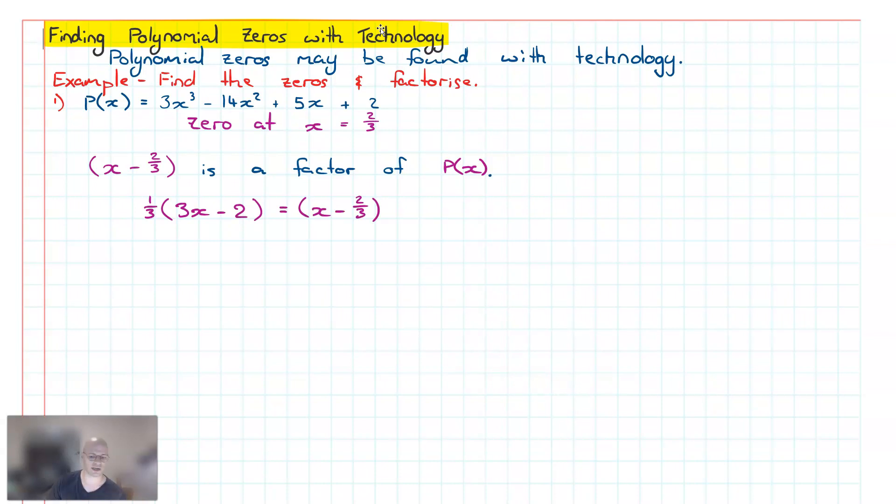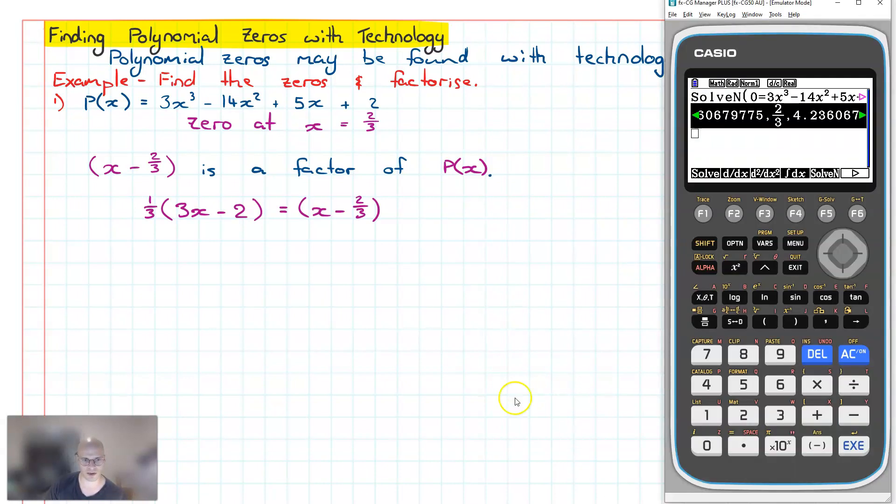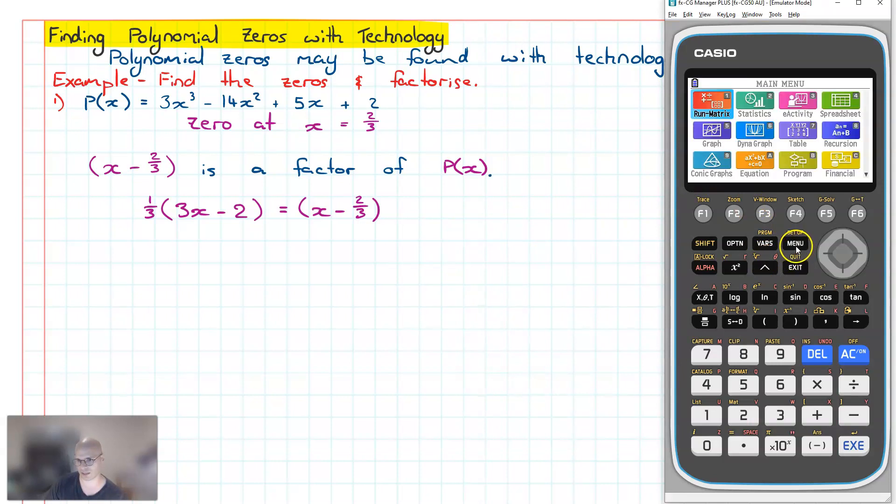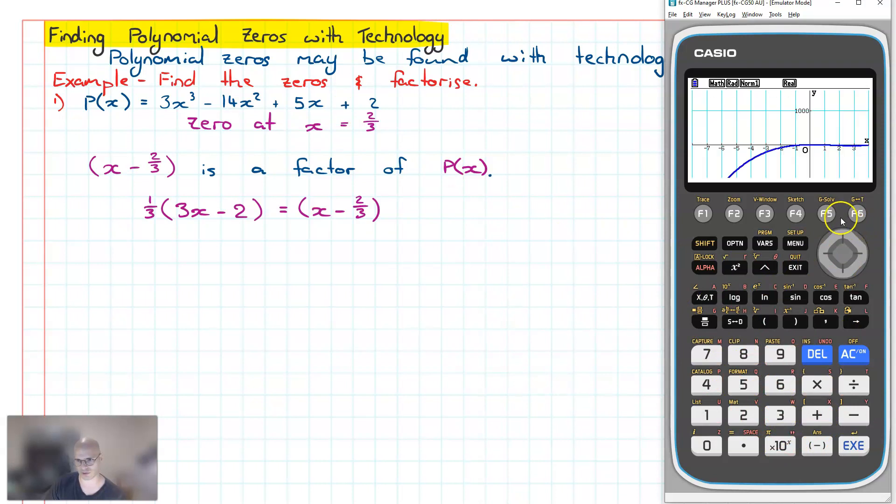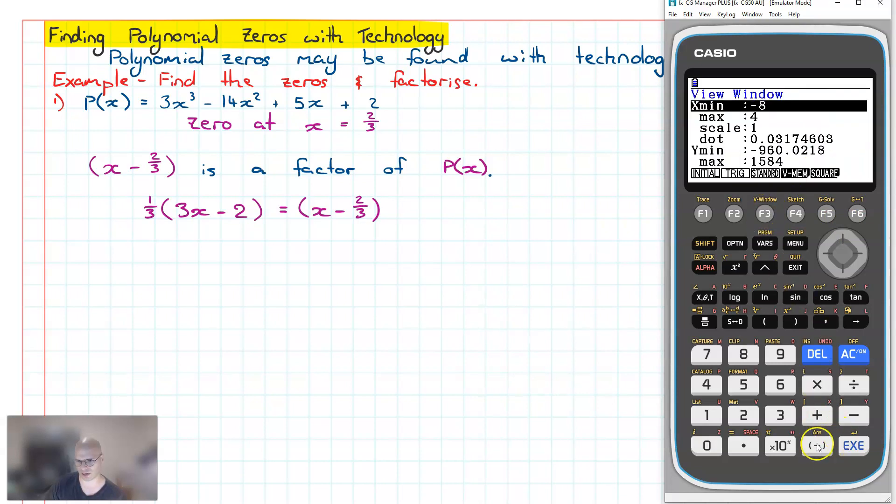Now the second way we can find these zeros is we can go back to our top menu by clicking menu, five for graph, or we can navigate in and press execute. And then we simply want to graph this polynomial shown over here. I hit draw and it's done an alright job, but I'm pretty sure it's not showing me all the roots. So what I'll do is I'll expand my V window quite significantly.